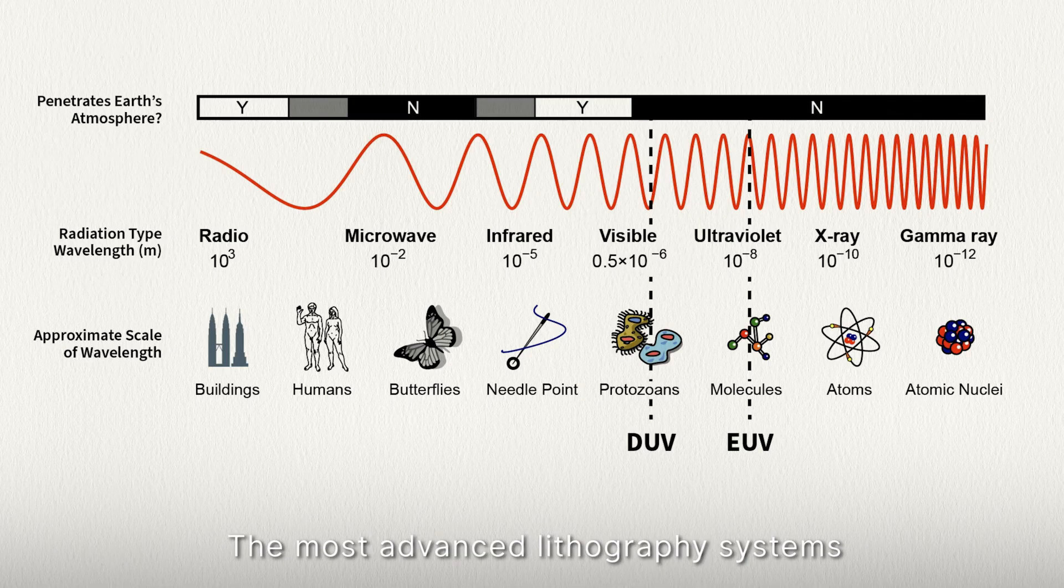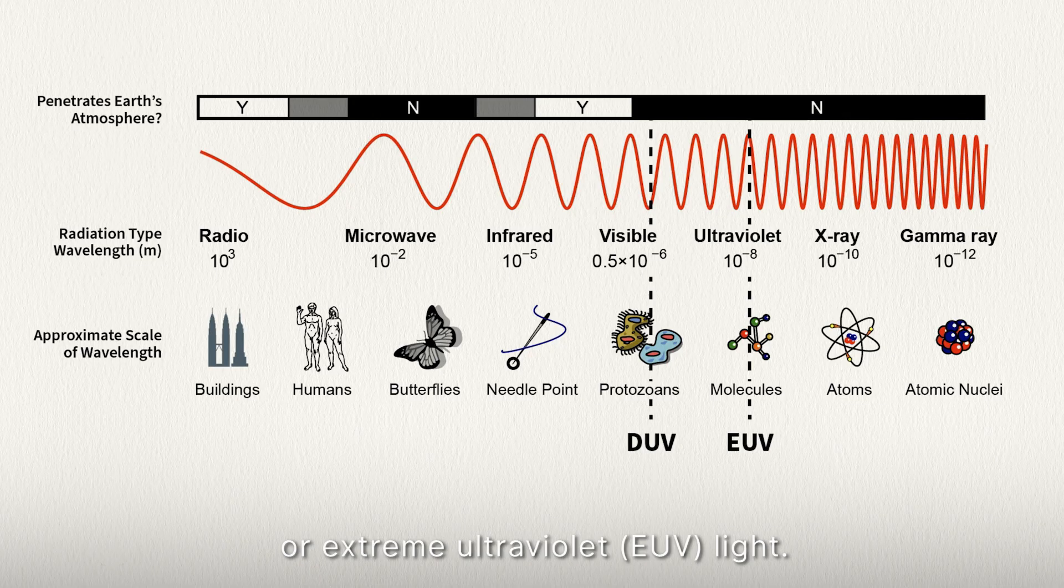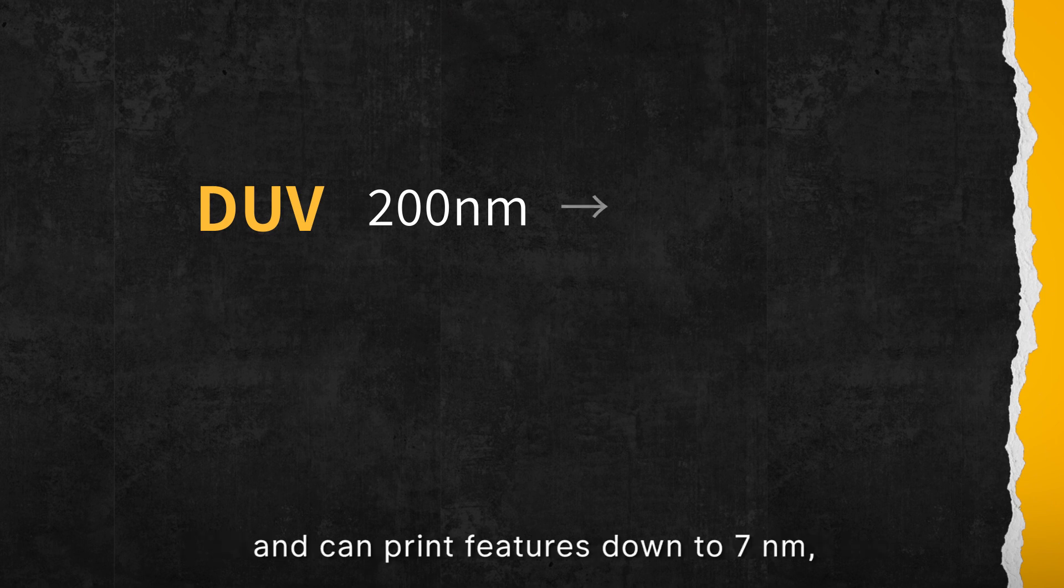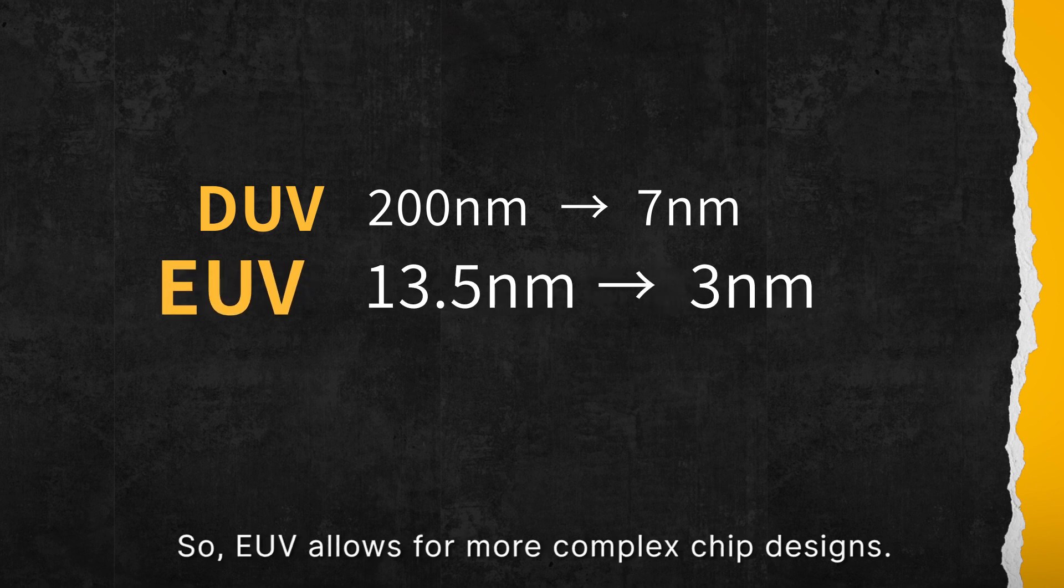The most advanced lithography systems use deep ultraviolet, that's DUV, or extreme ultraviolet, EUV light. The DUV systems use wavelengths around 20 nanometers that can print features down to 7 nanometers, while EUV systems use 13.5 nanometer light and can print features down to 3 nanometers. So EUV allows for more complex chip designs.